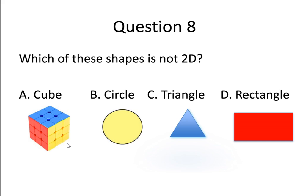Question number 8. Which of these shapes is not 2D? Option A, cube. Option B, circle. Option C, triangle. Option D, rectangle.